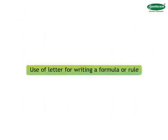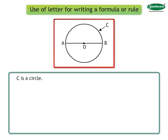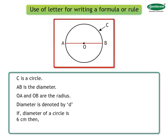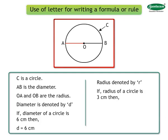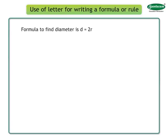See how to use letter for writing a formula or rule. Look at this circle alongside. We name the circle with an alphabet C. Segment AB is the diameter. If diameter of a circle is 6 centimeters, in short, we write it as D equals 6 centimeters. Radius is denoted by R. If radius of a circle is 3 centimeters, then it is written as R equals 3 centimeters. Diameter is twice radius is also denoted as D equals to 2R. D equals to 2R is a formula to find diameter.